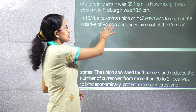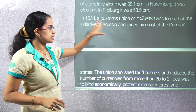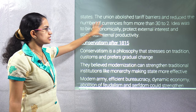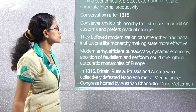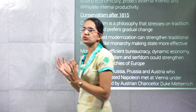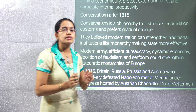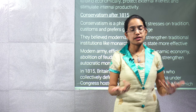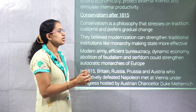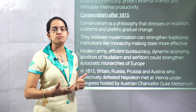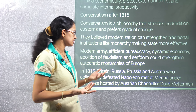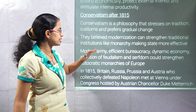You also had the customs union, or Zollverein, that was formed. It was an initiative of Prussia and was joined by most of the German states. This was an important initiative where the number of currencies was reduced. One important philosophy during that time was conservatism. Conservatism talked about containing culture and traditions along with modernity — bringing in modernisation while maintaining tradition, culture and customs. Therefore, change would only be gradual, never drastic. That was the basic idea prevalent after 1815.